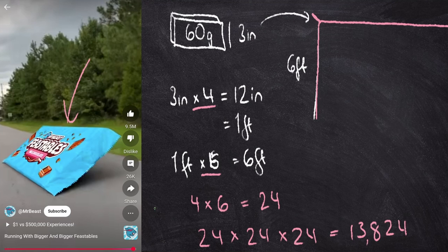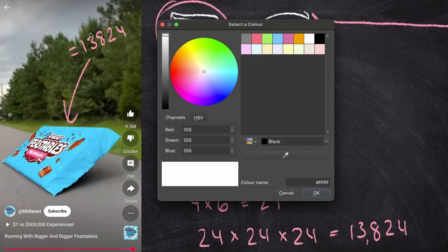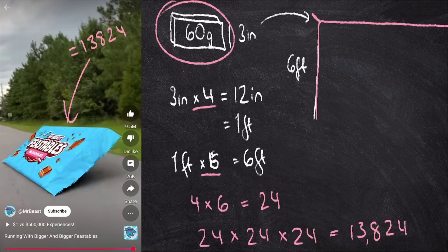So this massive chocolate bar is equivalent to 13,824 small chocolate bars. And since one small chocolate bar is 60 grams, then to find the weight of this massive chocolate bar,